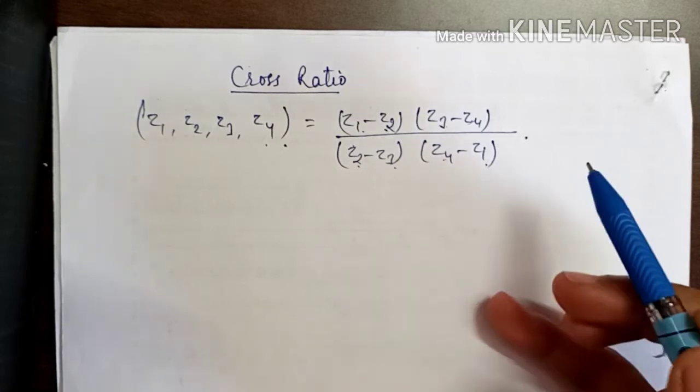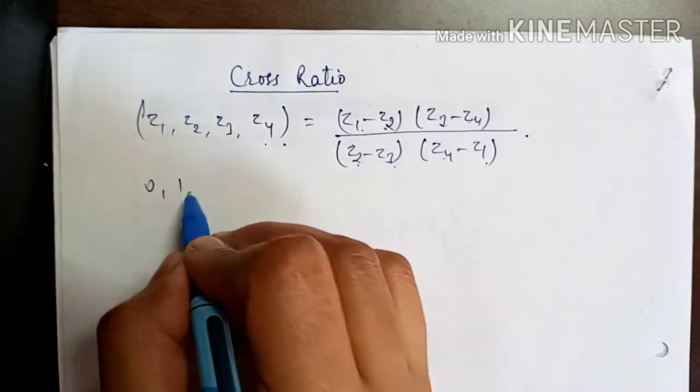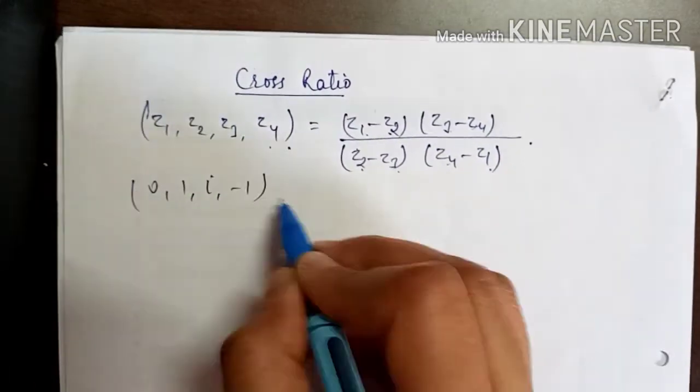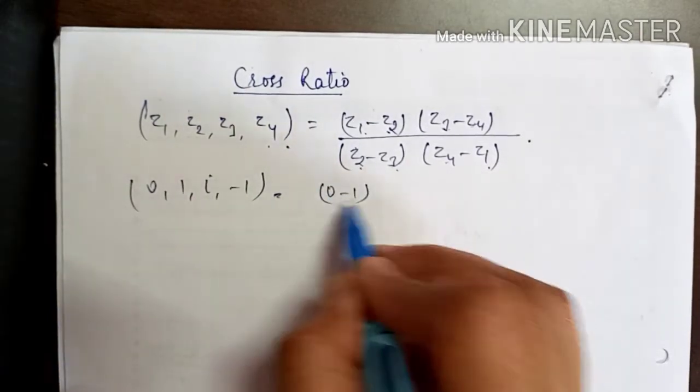If we have four points 0, 1, iota, and minus 1, then your cross ratio is defined as 0 minus 1.